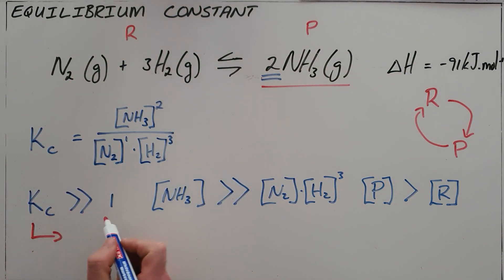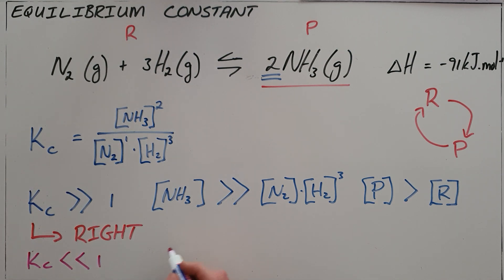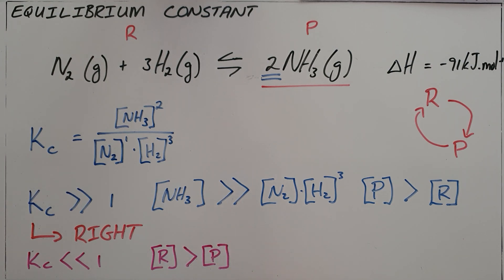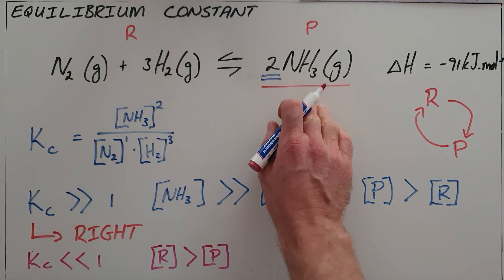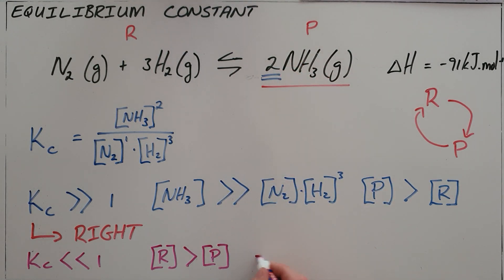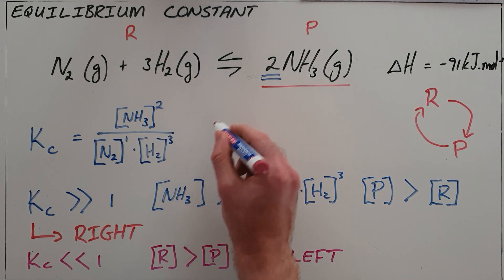So for Kc much bigger than one we say that equilibrium lies to the right. The converse is also true: if Kc is a number much smaller than one, what that is telling us is the concentration of reactants is far greater than the concentration of our products, which means that very little nitrogen and hydrogen becomes ammonia, and as a result we say that equilibrium lies to the left.